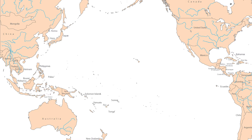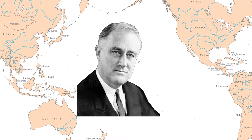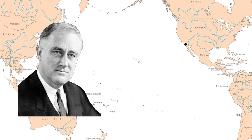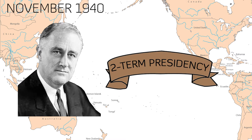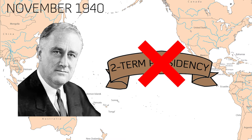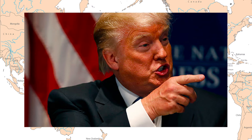As well as this, President Roosevelt moved the US Pacific Fleet Base from San Diego in California to Pearl Harbor in May 1940. In November 1940, the two-term presidency rule was broken and Roosevelt was elected for a third term. Oh great, Roosevelt — if only you could see the state of the USA now.